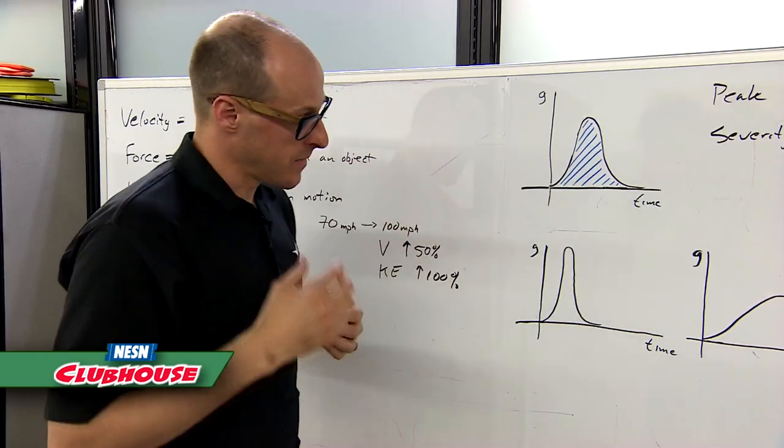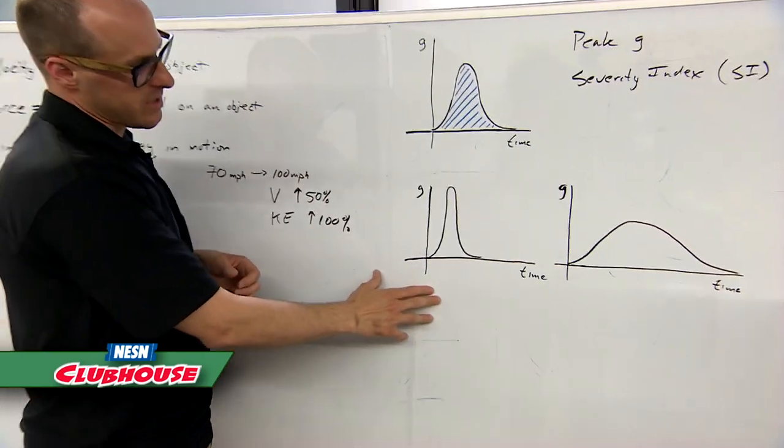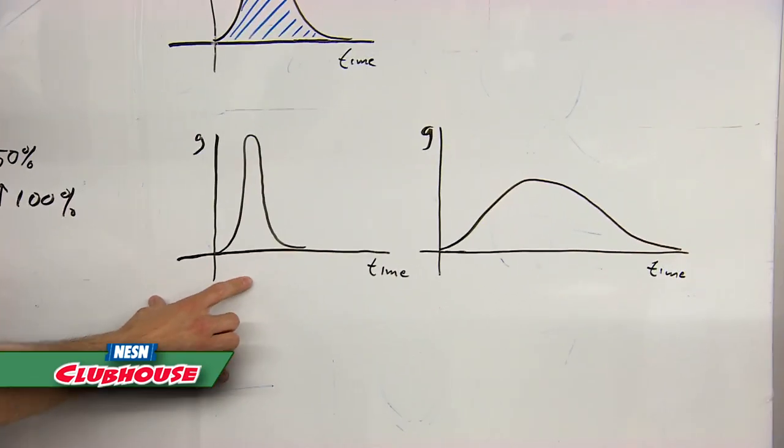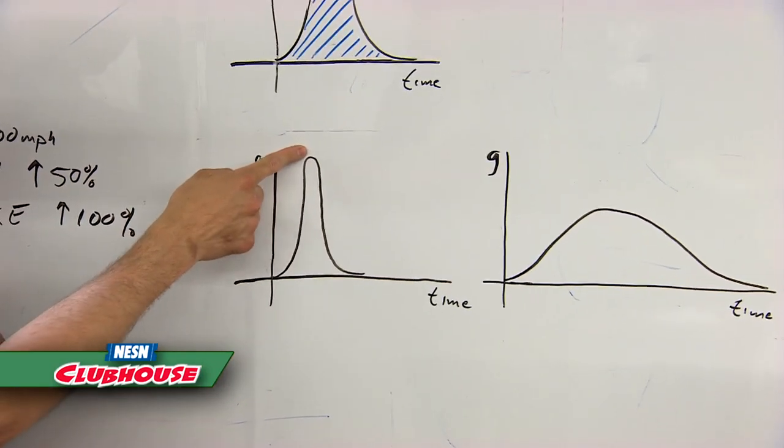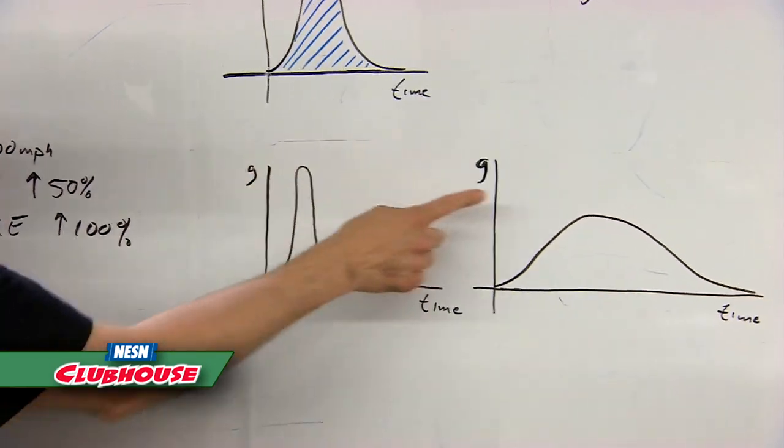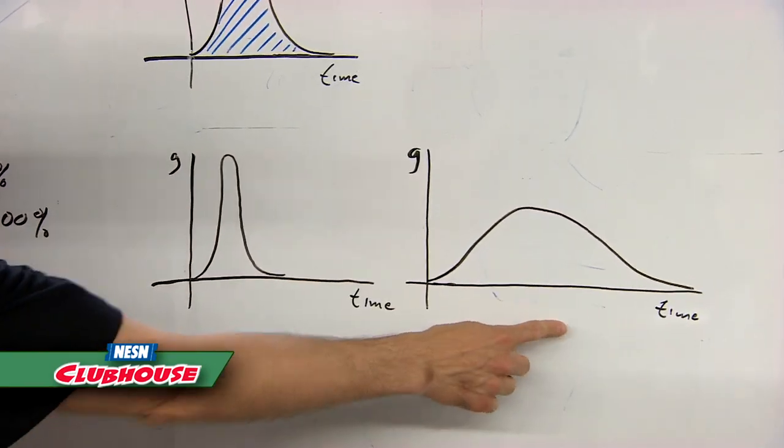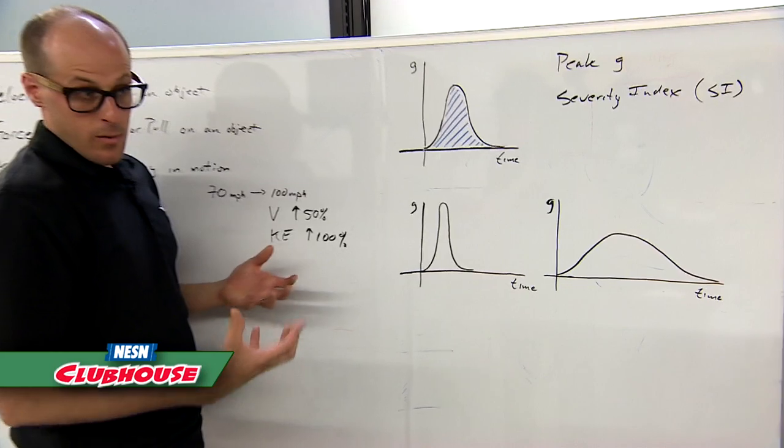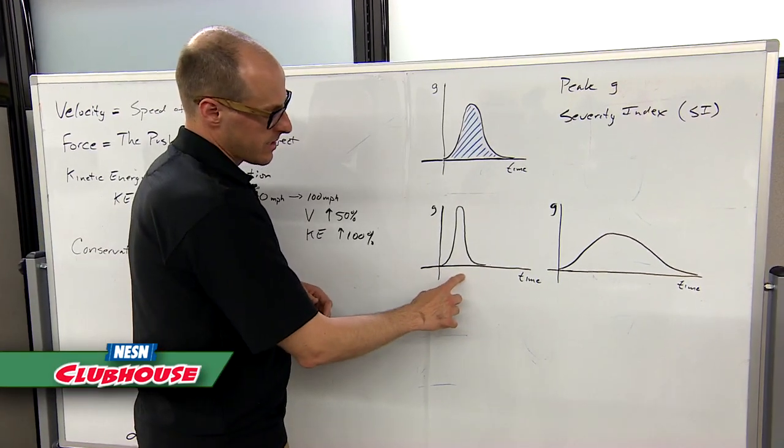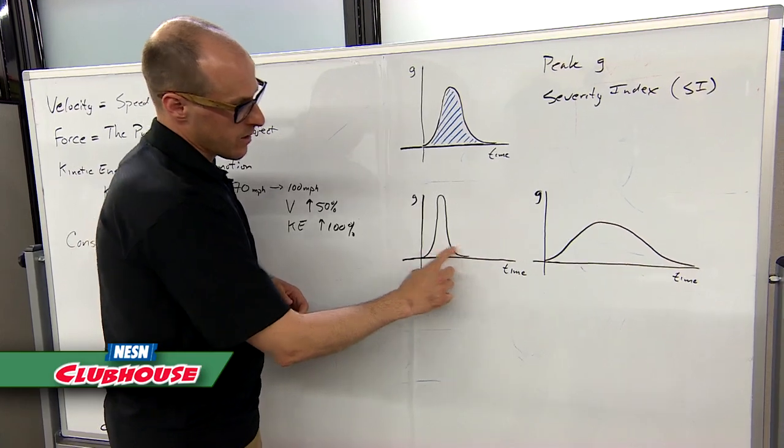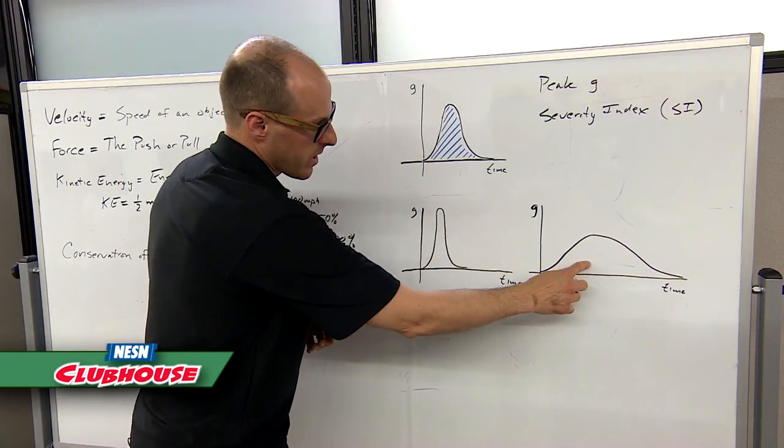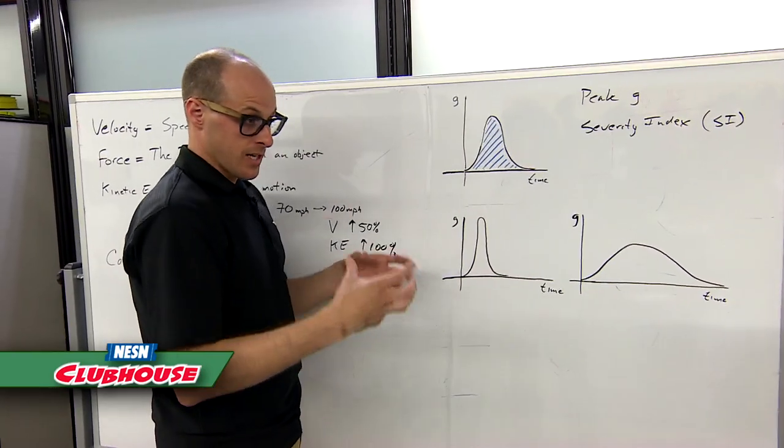You can think about things like this - we have two examples where one impact might look like this where you have a really high peak G. In some ways you can say that this peak G, this peak force, is double the peak force of this impact. But if you ask me what I want to get hit with, I'd rather get hit with this guy because there's relatively less area under the curve than here. This is a much bigger impact in terms of how much energy is actually coming into the head.